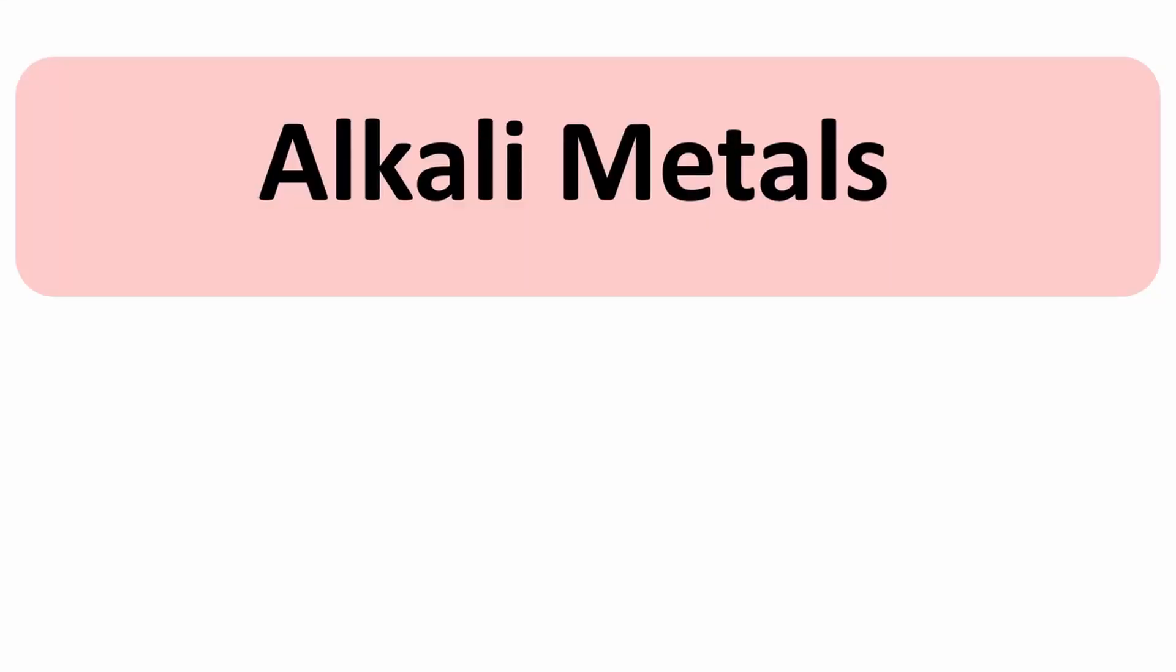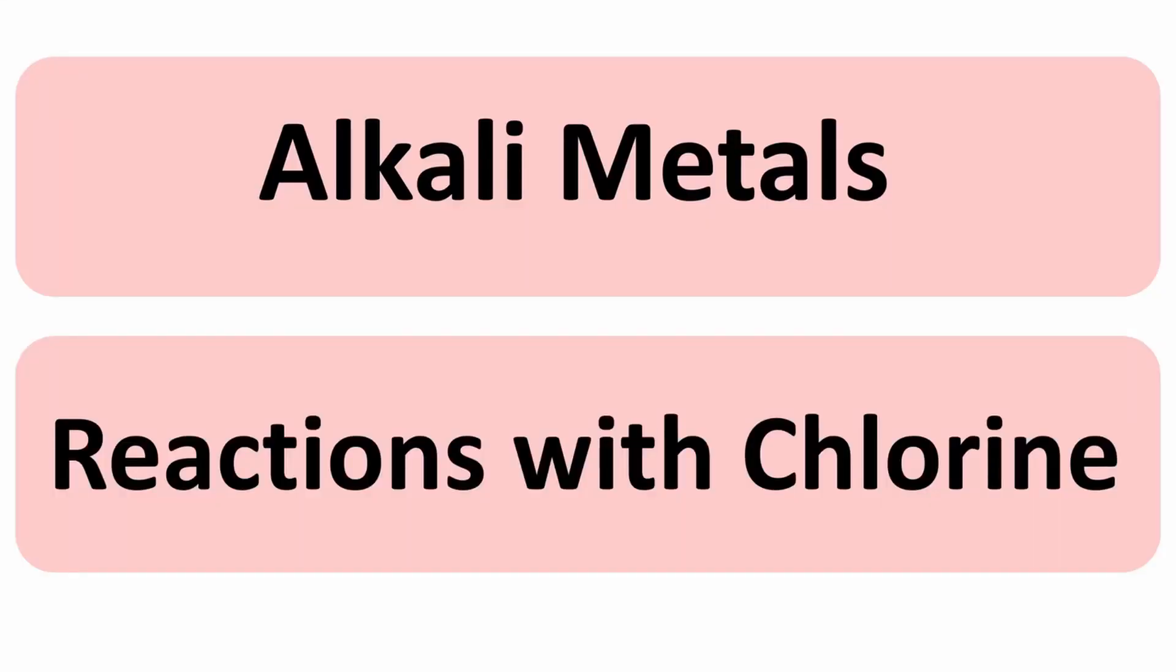In this video, we'll be looking at how alkali metals react with chlorine. Chlorine is in group 7, it's a halogen.